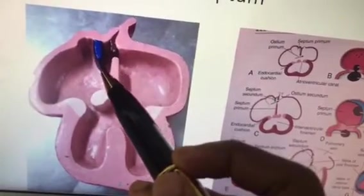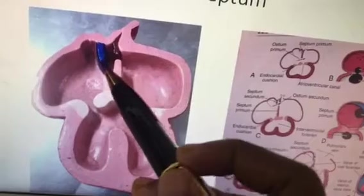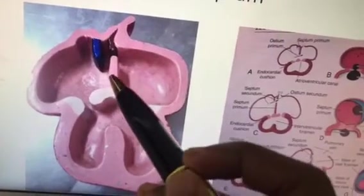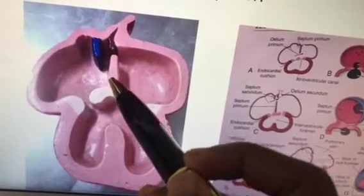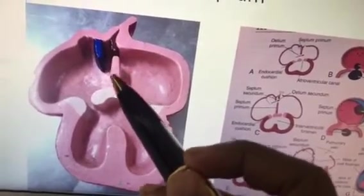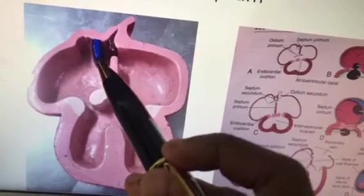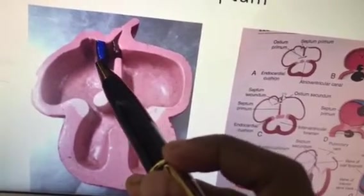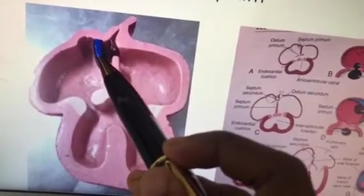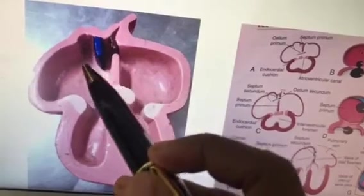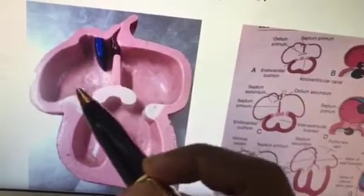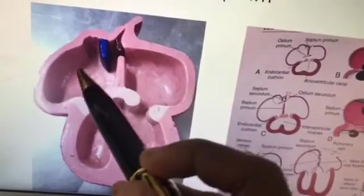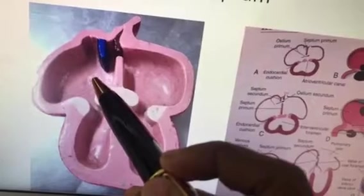This area is later transformed into the fossa ovalis. The floor of the fossa ovalis is formed by the septum primum and the limbus of the fossa ovalis is formed by the septum secundum.